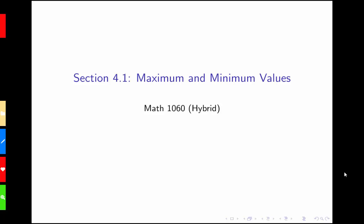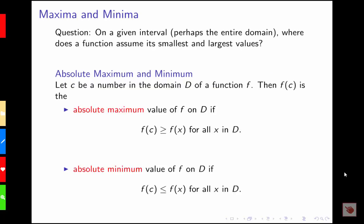The first thing we need to look at is some definitions of what we mean by absolute maximum and minimum values. If we're talking about a function f and we let c be a number in the domain d of our function, then we say that f of c is the absolute maximum value of our function on the domain if f of c is greater than or equal to f of x for all x in the domain.